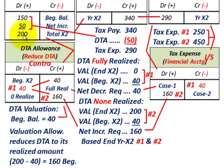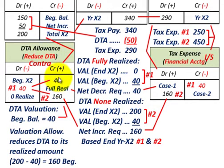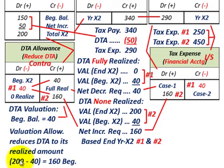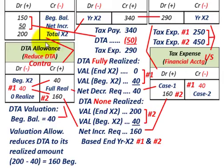Our total deferred tax asset at the end of year X2 is $200,000. But because we have a beginning balance in our allowance account — a reduction to our deferred tax asset of $40,000 — what we're actually getting is a realized amount of $160,000. The valuation allowance reduces the deferred tax asset: starting at $200,000, reduced by the beginning balance of $40,000, giving us $160,000.